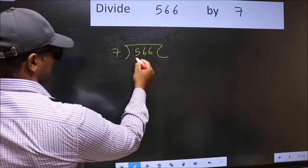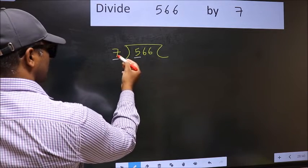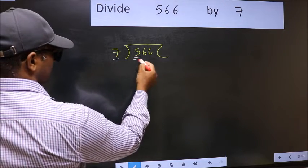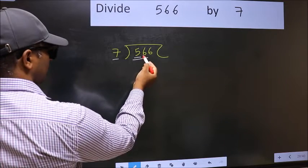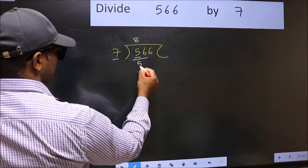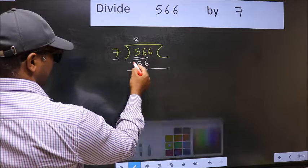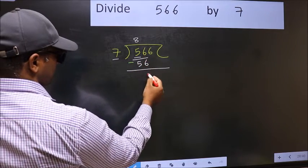Next, here we have 5 and here 7. 5 is smaller than 7. So we should take two numbers, 56. When do we get 56 in 7 table? 7 times 8 is 56. Now you should subtract. 56 minus 56, 0.